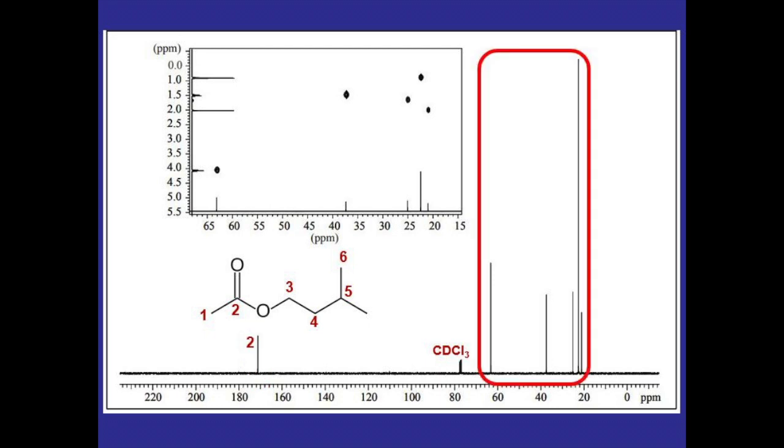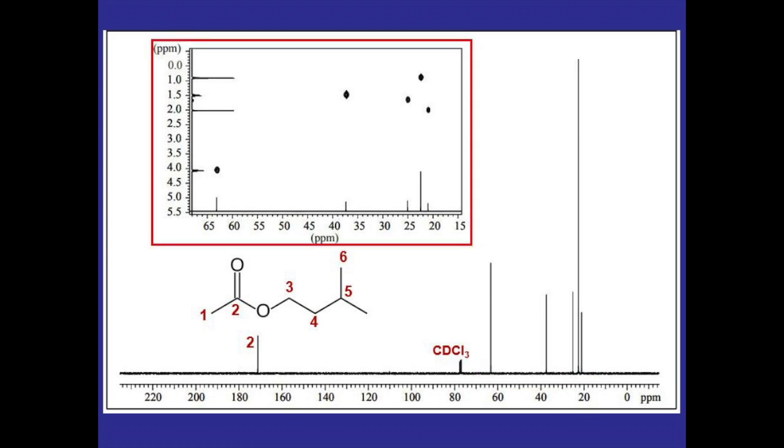Now for the rest of the peaks, you could probably do something similar and analyze them based off of their chemical shift, but there is some ambiguity and some magnetic properties that affect the carbons that you might not recognize. So you are given this 2D NMR, which I'm going to show you how to use.